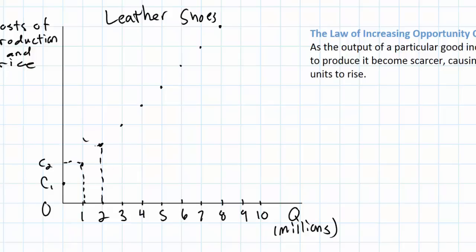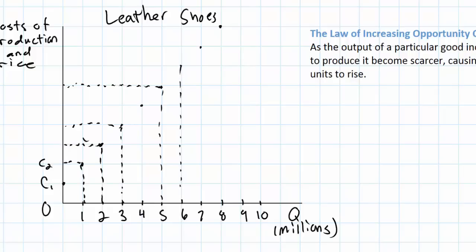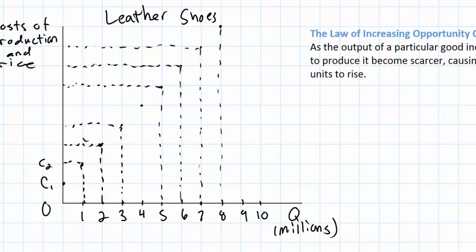Let's talk about why. What happens to the resources needed to produce leather shoes as leather shoe production doubles and then triples — from one million to two million to four million to six million and so on? Resources are becoming scarcer. Leather, which used to be gotten very cheaply because it was abundant and there was no leather shoe industry at all, is now becoming more costly. The labor needed to work in these factories — wages are rising because there's more competition for that labor. The machinery, the sewing machines, the cutting machines — there's more demand for them, therefore the costs of these machines rise and the costs of producing additional leather shoes increase. As output rises, costs of additional leather shoes increase due to the increasing scarcity of the resources needed to produce them.